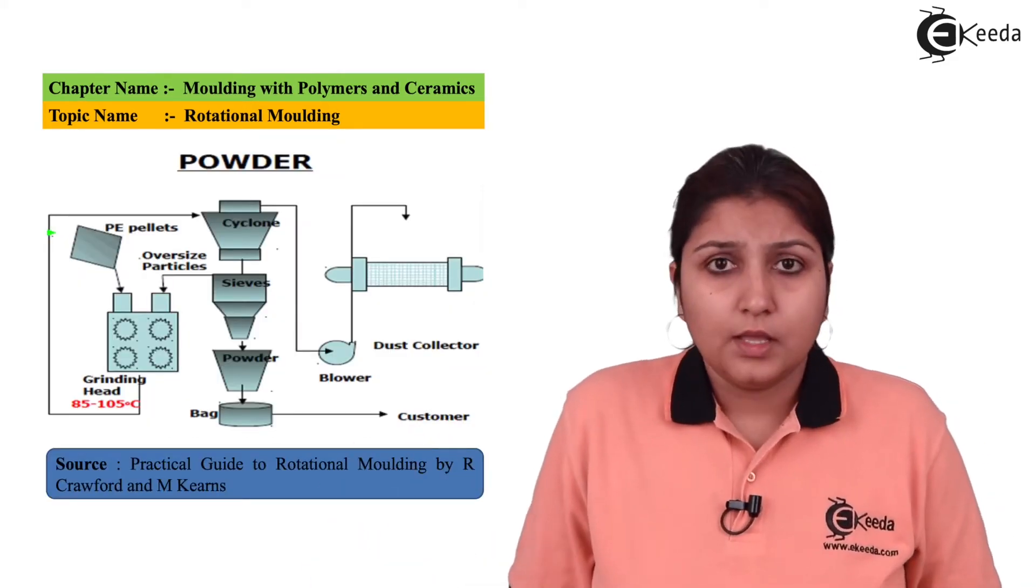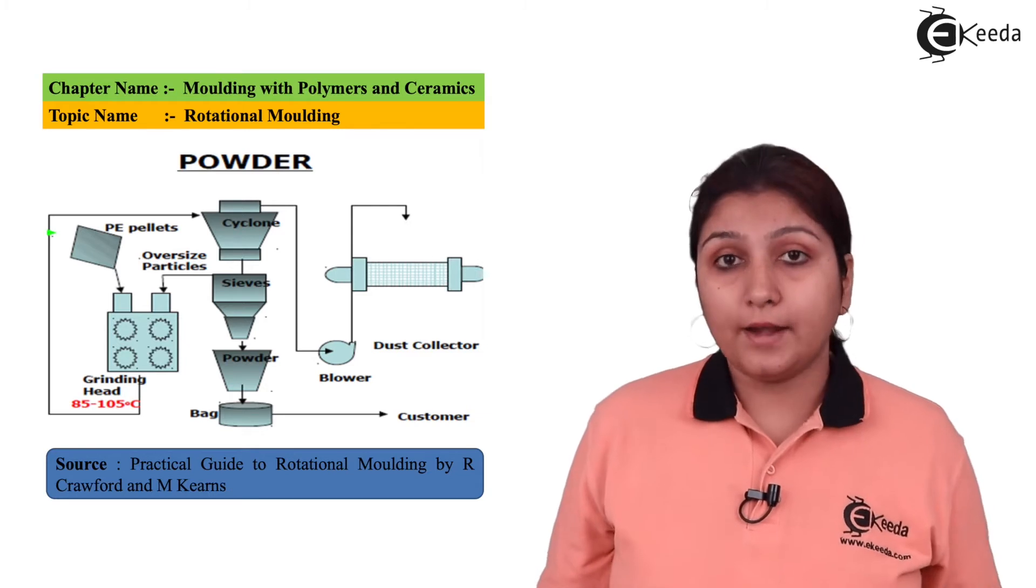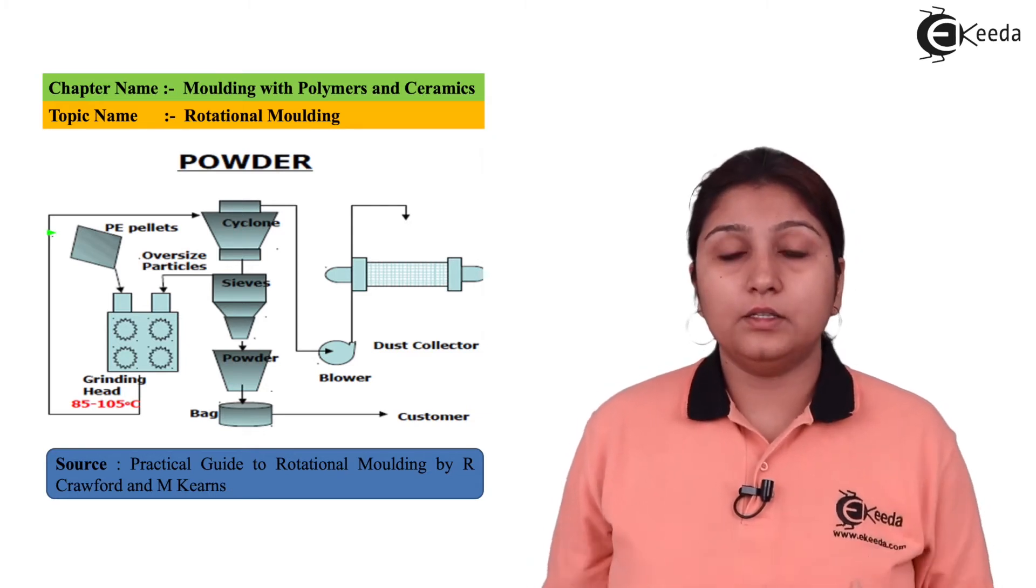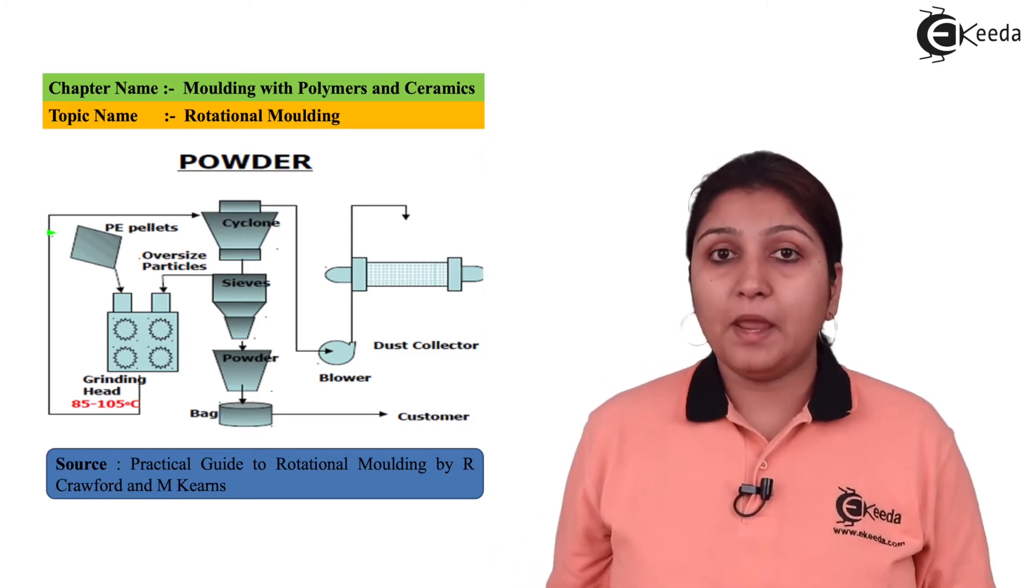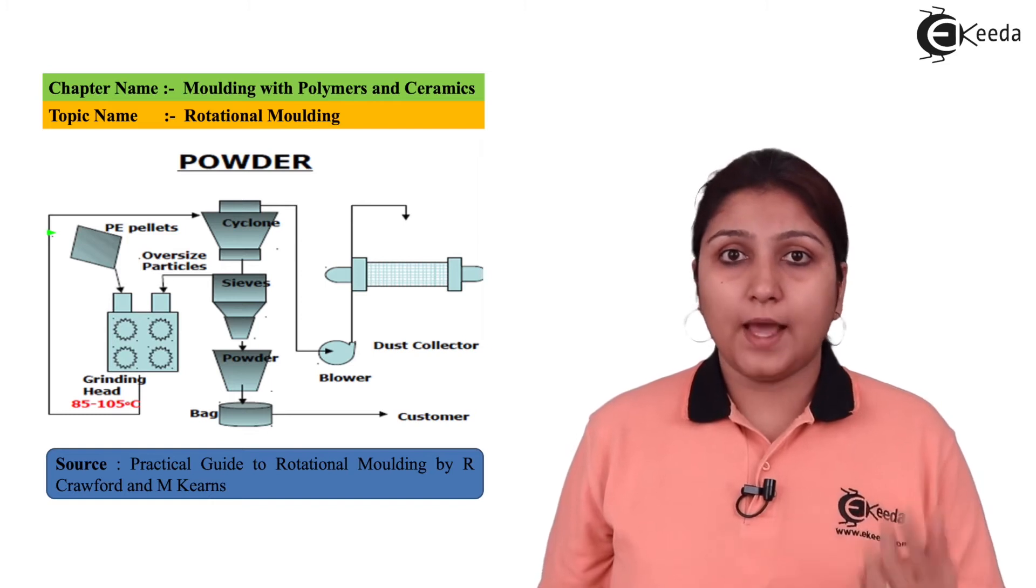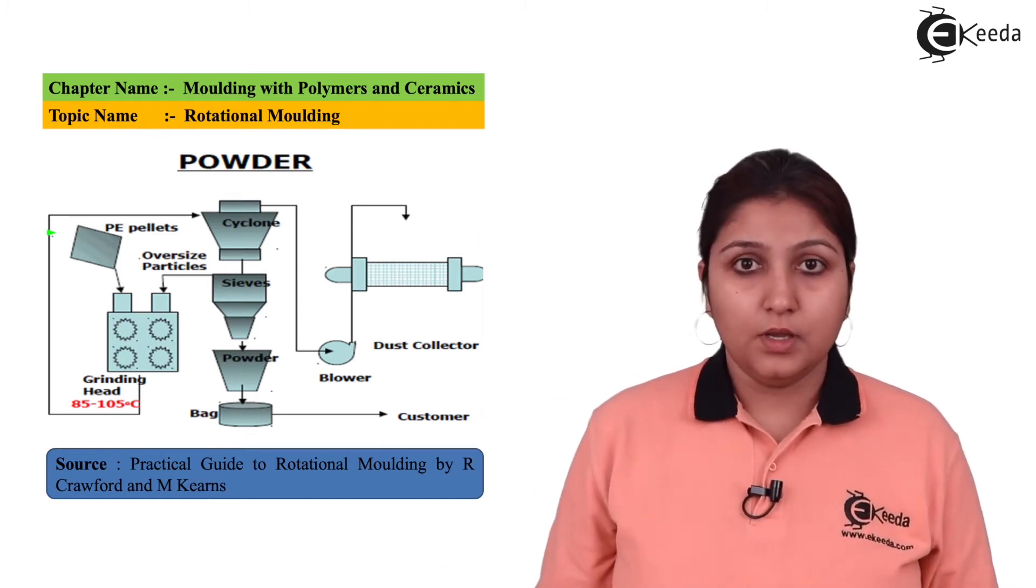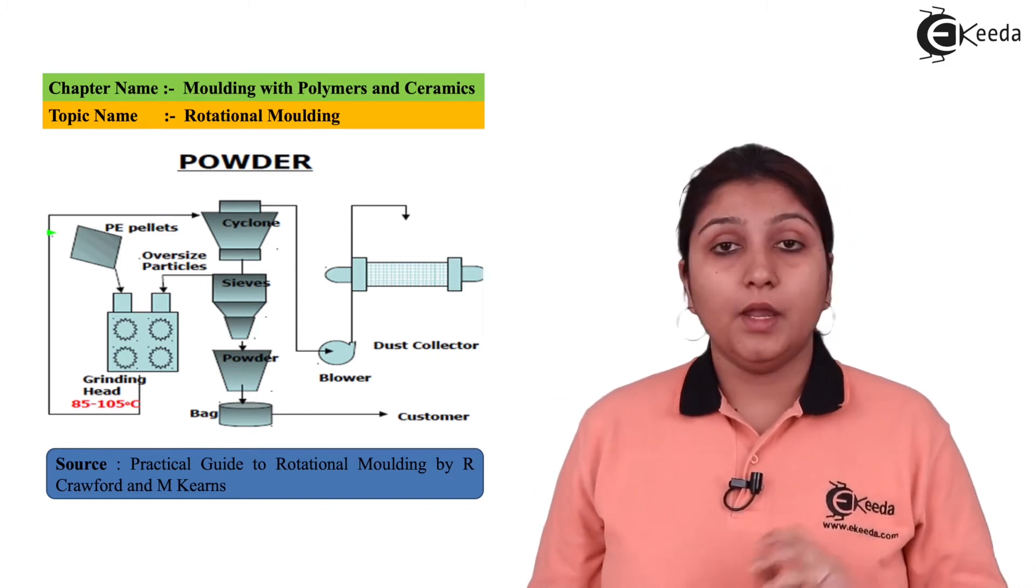In this diagram, you can see the whole process. There is a cyclonic grinder which grinds the particles so that large-size grains cannot be transferred. The material is transferred to the cyclone, ground and re-ground, then passed through sieves.